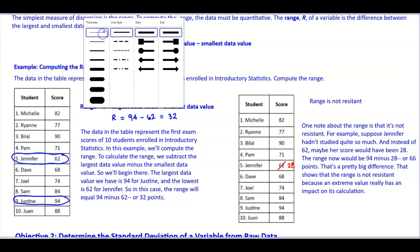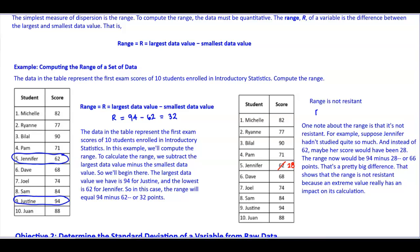Now let's find the range of that scenario. The largest data value is still 94. And if we subtract 28, then we get a value of 66. So the range now would be 66 points. And that's a pretty big difference from the first one. That shows the range is not resistant, because an extreme value really has an impact on its calculation.